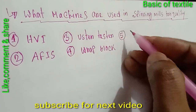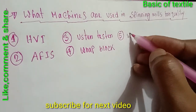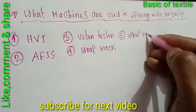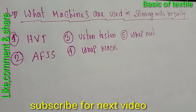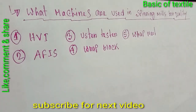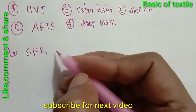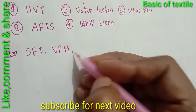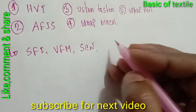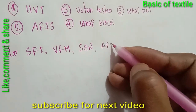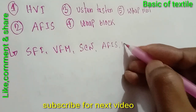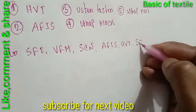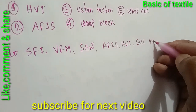Number five: Uster Tester — Grab Deal. Okay, now the abbreviations: SFI, BFM, SCN, AFIS, HVI, SCI — full forms.